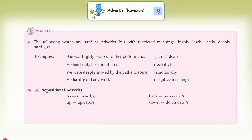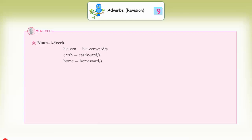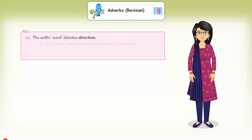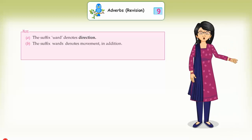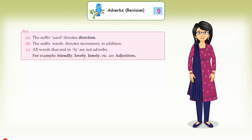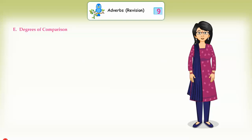(3) Prepositional adverbs: on/onwards, back/backwards, up/upwards, down/downwards. Noun adverbs: heavenward(s), earthward(s), homeward(s). Note: (a) The suffix '-ward' denotes direction. (b) The suffix '-wards' denotes movement in addition. (c) All words that end in '-ly' are not adverbs — for example, friendly, lovely, lonely, etc. are adjectives.